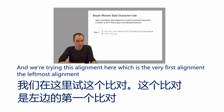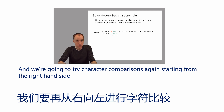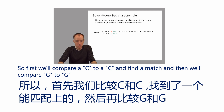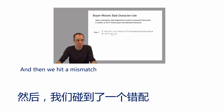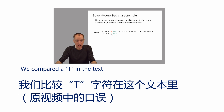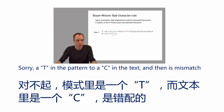We're going to try character comparisons starting from the right-hand side. First we compare C to C and find a match, then G to G, then T to T, and then we hit a mismatch: a T in the pattern mismatches a C in the text.